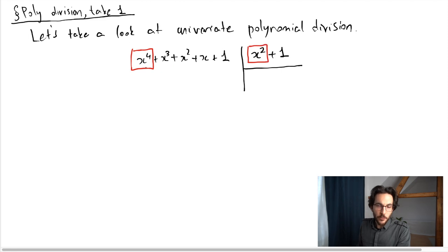The thing is x to the 4 is divisible by x squared, and I perform this division. x to the 4 divided by x squared is going to give me x squared. I write x squared here, and now I multiply x squared with the polynomial that I'm dividing by. This is x squared plus 1. I get x to the 4 plus x squared, and now I subtract. So this gives me x cubed plus x plus 1. Now the remainder is x cubed plus whatever, and I just need to look at x cubed and divide it by x squared again.